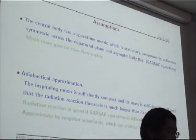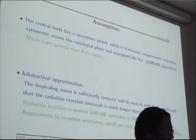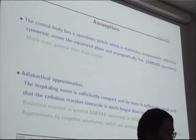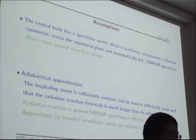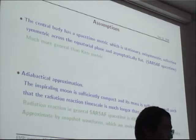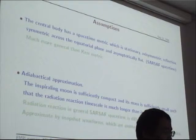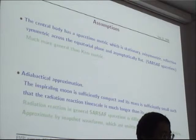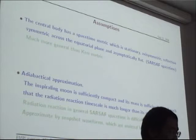In principle, we can abandon the reflection symmetry assumption. Second, we assume the dynamics can be described by the adiabatic approximation. So the inspiraling moon is sufficiently compact and its mass is sufficiently small, such that the radiation-reaction timescale is much longer than the orbital timescale. With this adiabatic approximation, we can divide the observed waveform into several snapshots. Each snapshot is associated with the moon moving in a single geodesic. When the moon loses a certain amount of energy, it transitions to a new geodesic, and so on.